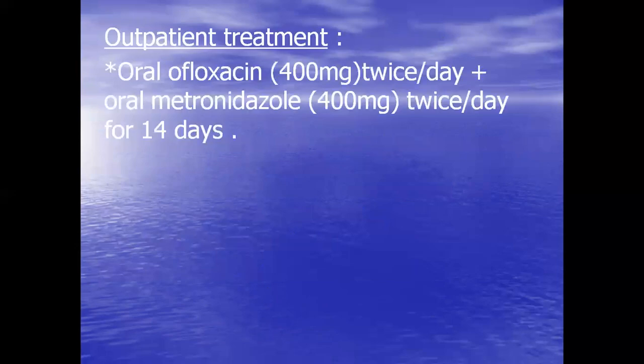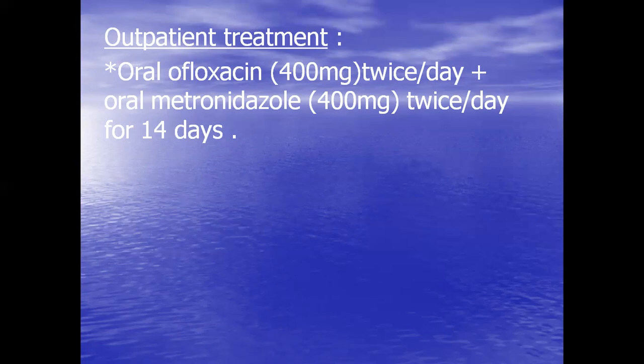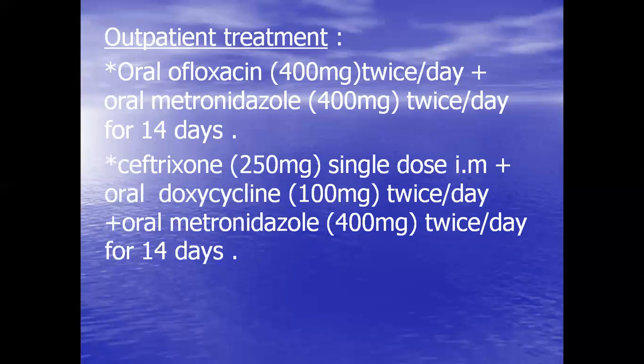For outpatient treatment, multiple regimens are available due to possible allergy or resistance. First regimen: oral ofloxacin 400 mg twice a day plus oral metronidazole 400 mg twice a day for 14 days. It is very important to complete the full course of treatment to avoid drug resistance. Second regimen: ceftriaxone 250 mg single dose IM, together with oral doxycycline 100 mg twice a day and oral metronidazole 400 mg twice a day for 14 days.